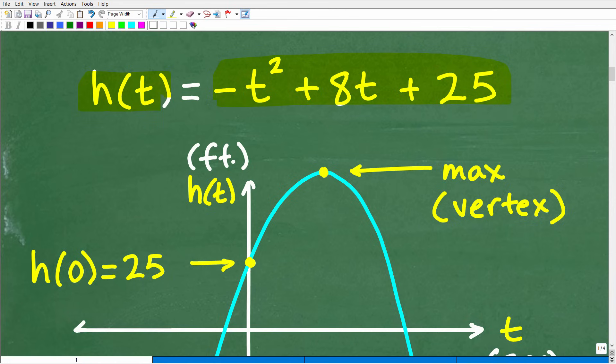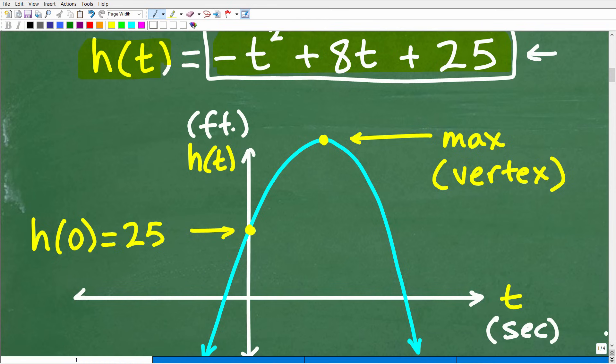By the way, if you need help with any of this stuff that I'm talking about, you want to check out my algebra one or algebra two course. Effectively, if you did know how to graph a quadratic equation or a quadratic function, it's not necessary in order to solve this problem. But we could graph this function right here and it would look basically like this. You're going to have an upside-down parabola.